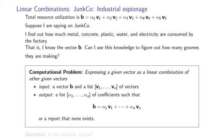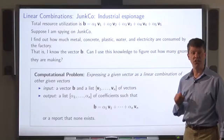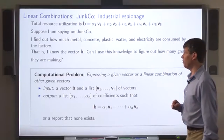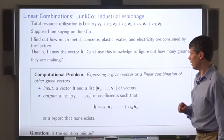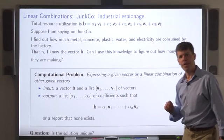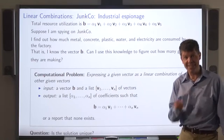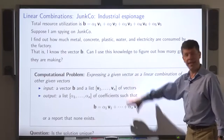This raises the following computational problem: given a vector b and a list of vectors v1 through vn, can you compute the coefficients with which b is expressed as a linear combination of v1 through vn? And even if we can compute that, am I going to get the right answer? Is there a single right answer?